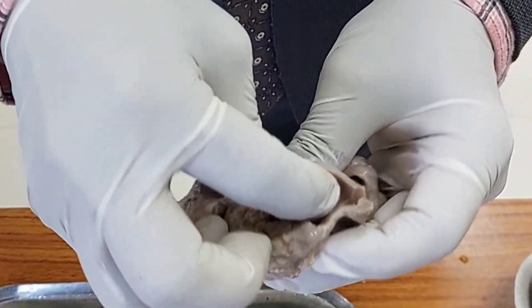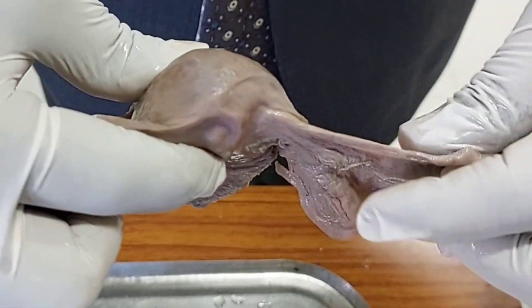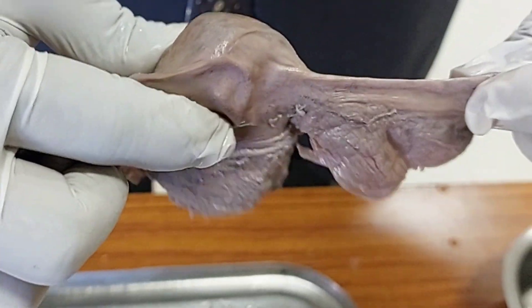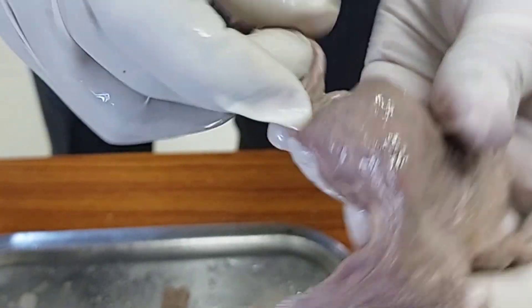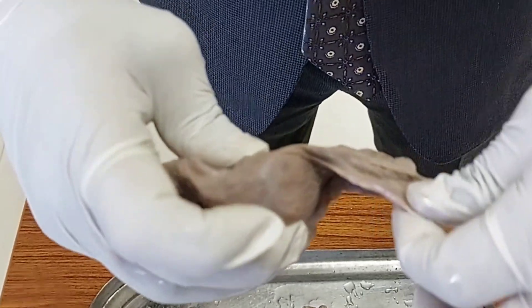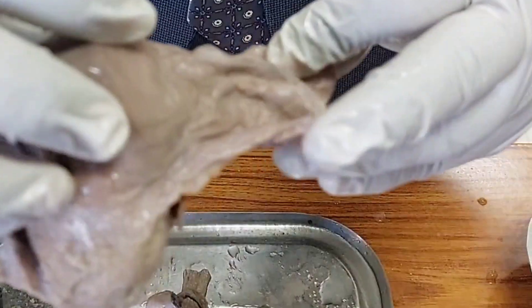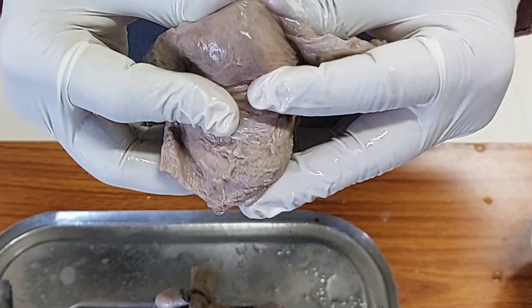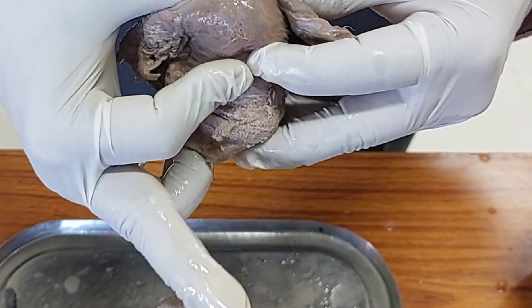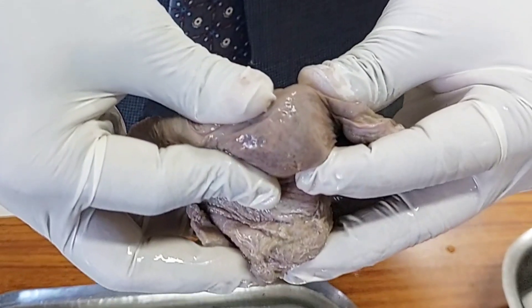This specimen also shows the vaginal wall to some extent. Within the broad ligament you can see the fallopian tube, and in front of it is the round ligament. Posteriorly is the ligament of ovary. This demonstrates the anteversion and anteflexion, with the vagina in front forming approximately a 90-degree angle with the cervix.